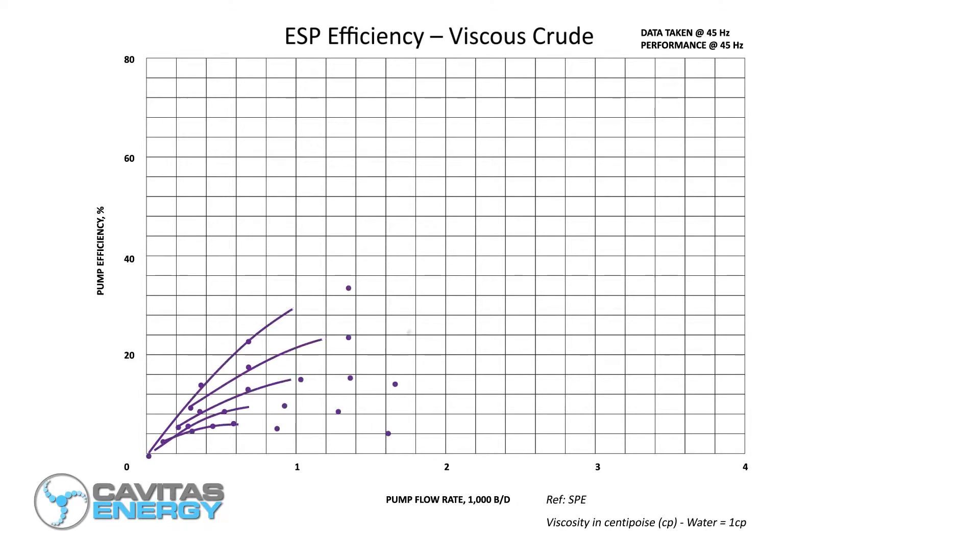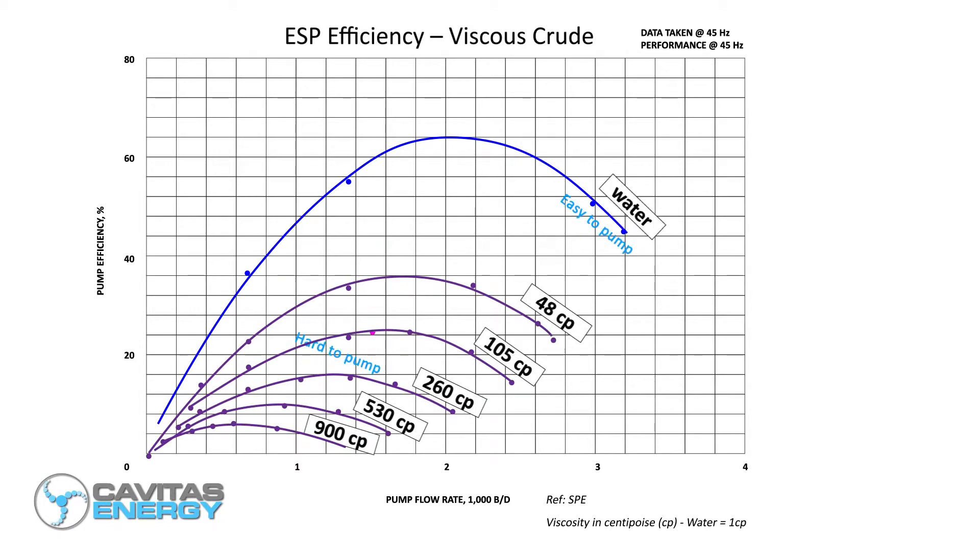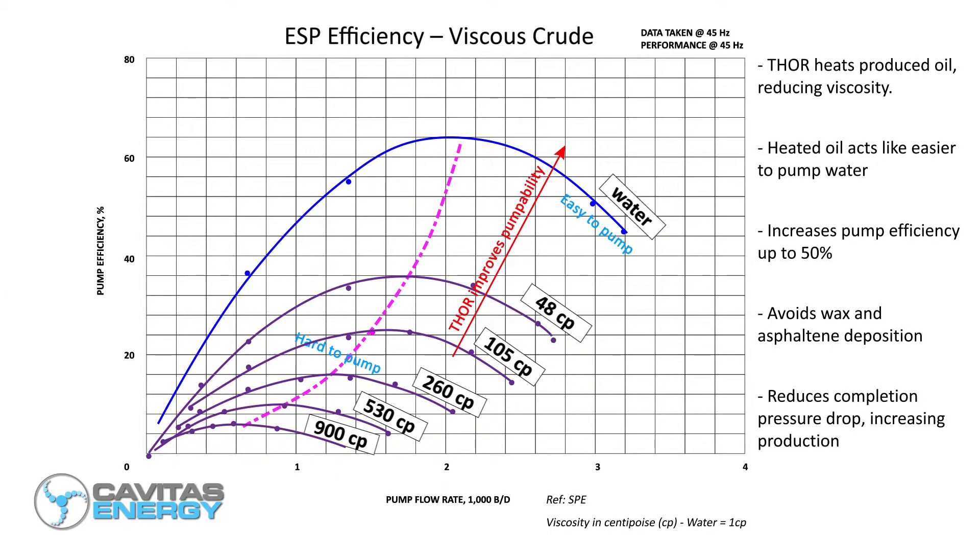This viscosity reduction causes produced oil to act like easily pumped water, increasing artificial lift system efficiency by up to 50% and prolonging the system's operational life, potentially by years.